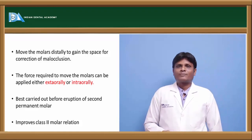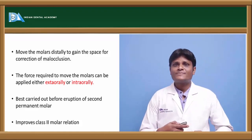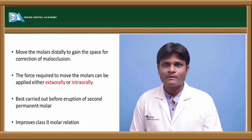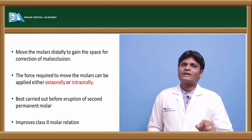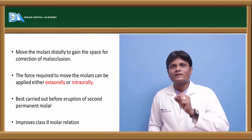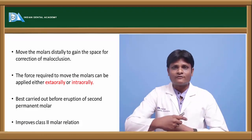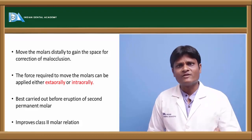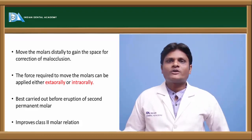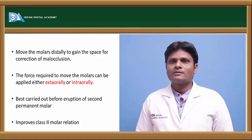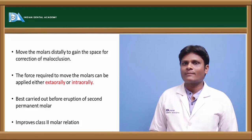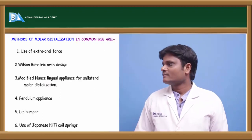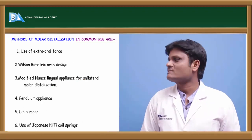Molar distalization also helps in correction of a Class II molar relationship, particularly distalization of the maxillary first permanent molar. If the maxillary first permanent molar is distalized in a patient having Class II molar relationship, the Class II relationship can be converted into Class I. The force required to distalize the molars may be drawn from extraoral or intraoral appliances.